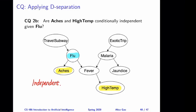We need to decide whether this path is blocked by any node on the path. The path is not blocked by fever — this is based on rule number one. But the path is blocked by flu, based on rule number two: if flu is observed, then it blocks the path. Since this is the only path between the two variables and it is blocked, the two variables are conditionally independent given flu.